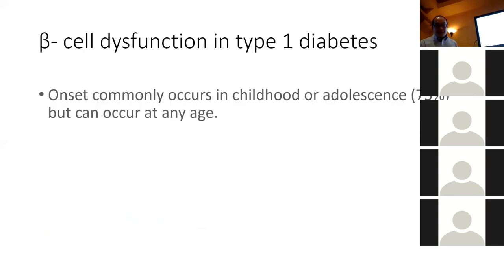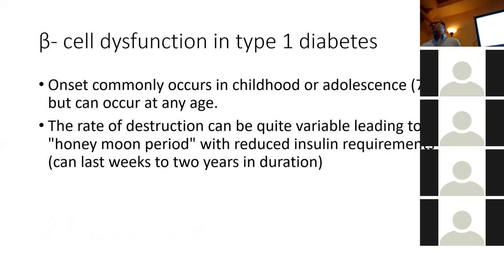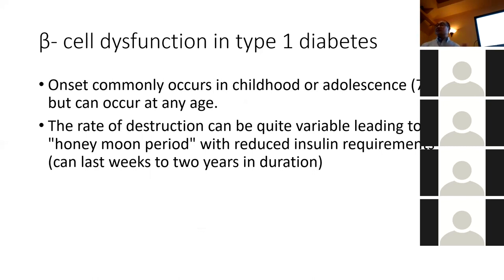Beta cell dysfunction in type 1 diabetes mostly occurs during adolescence. There's a honeymoon period where people with type 1 diabetes have a little bit of insulin production, so they can use very small amounts of insulin, but eventually their immune system will take over, destroy the rest of the beta cells, and then they'll be fully dependent on insulin.